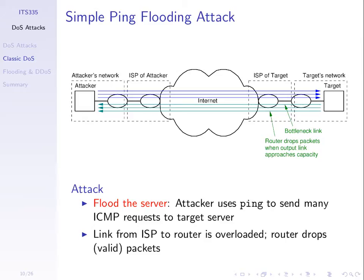We're looking at how a malicious user can overload some target to deny normal users access to that target. We've been going through some scenarios. We're looking at a simple ping flooding attack where there's some target computer the malicious user wants to stop people accessing. The idea is that on one of the links leading to that target — especially the slowest link, the bottleneck link — we try to send enough packets such that the capacity of that link is fully utilized.